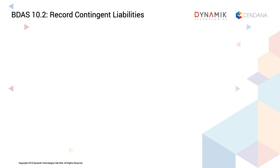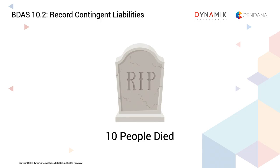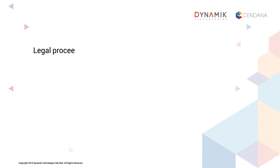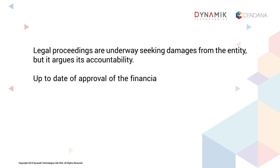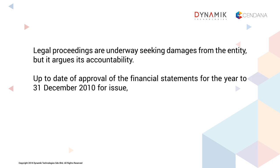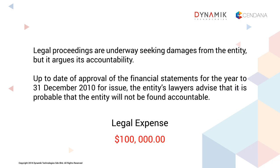To record the contingent liability, let's assume the following scenario. After a wedding in 2010, 10 people died, possibly as a result of food poisoning from products sold by the entity. Legal proceedings are underway seeking damages from the entity, but it argues its accountability. Up to the date of approval of the financial statements for the year to 31st December 2010, the entity's lawyers advise that it is probable that the entity will not be found accountable.